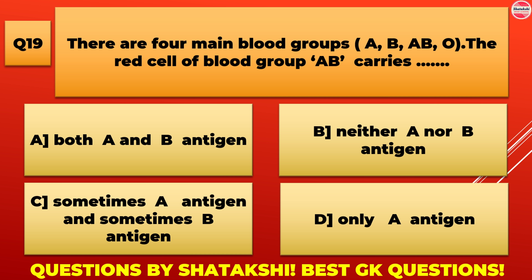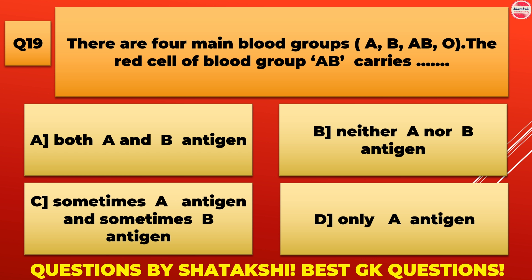There are four main blood groups: A, B, AB, and O. The red cells of blood group AB carry: A. Both A and B antigens, B. Neither A nor B antigen, C. Sometimes A antigen and sometimes B antigen, D. Only A antigen. A. Both A and B antigens is the correct answer.